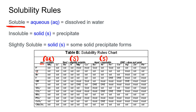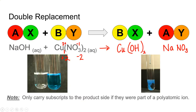Thinking about our two products: for copper(II) hydroxide, we look for the intersection of copper and hydroxide, and that says insoluble — so that's our solid product. For sodium nitrate, the intersection of sodium and nitrate is soluble — so that will be our aqueous product. Sodium nitrate is aqueous, and copper(II) hydroxide is solid.